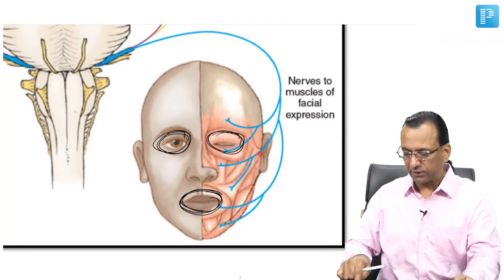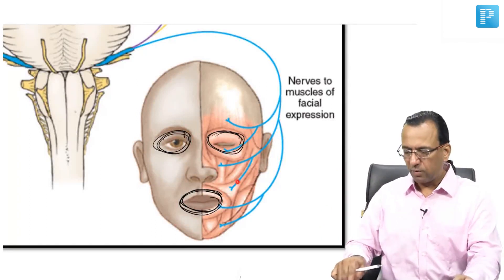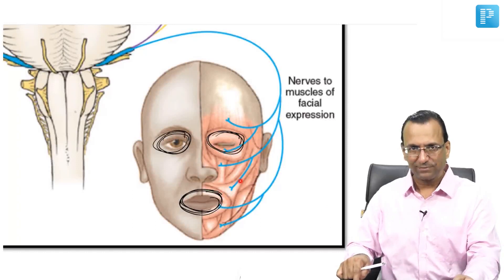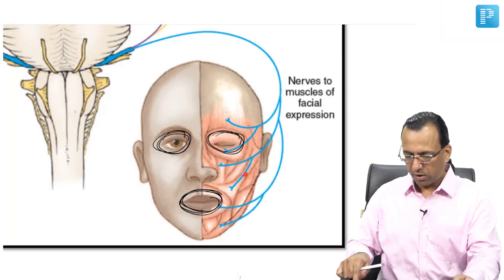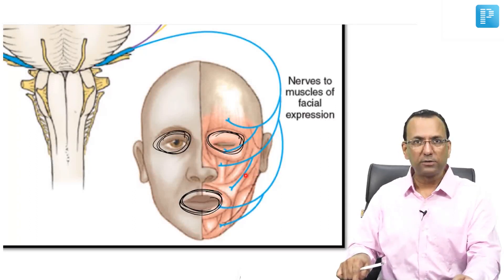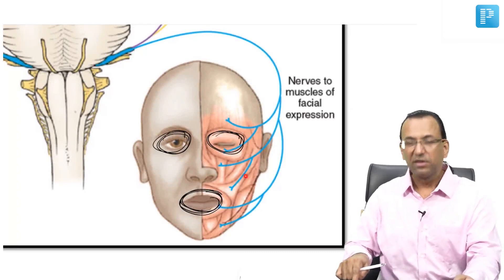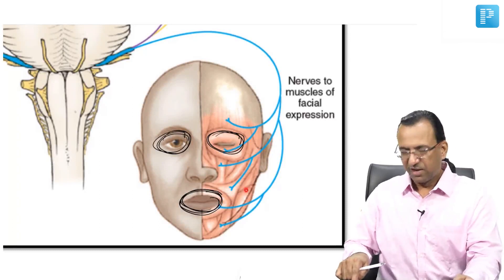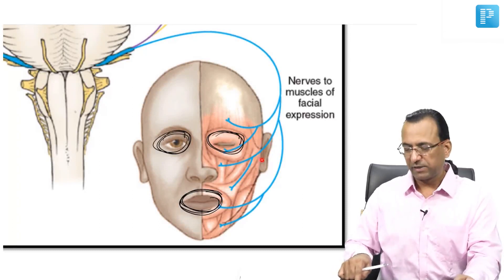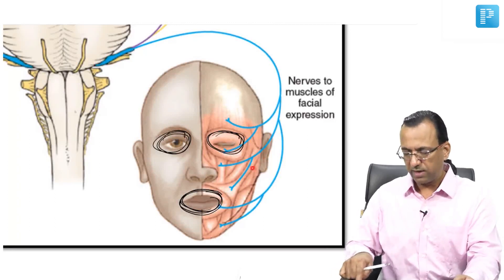Then you have zygomaticus major for smiling, and buccinator. Zygomaticus major is basically the smile muscle. There's some banter about making a fake smile, but zygomaticus major is fundamentally responsible for smiling.